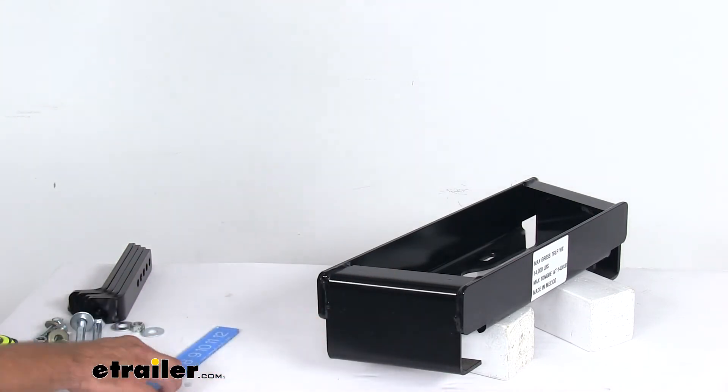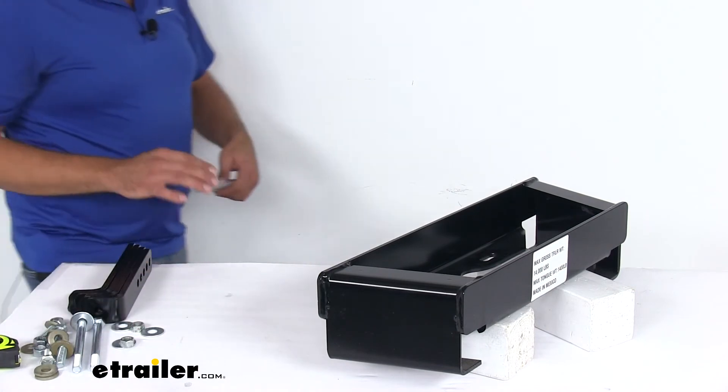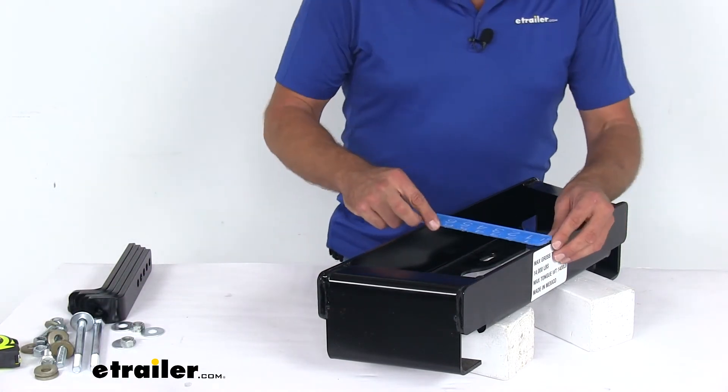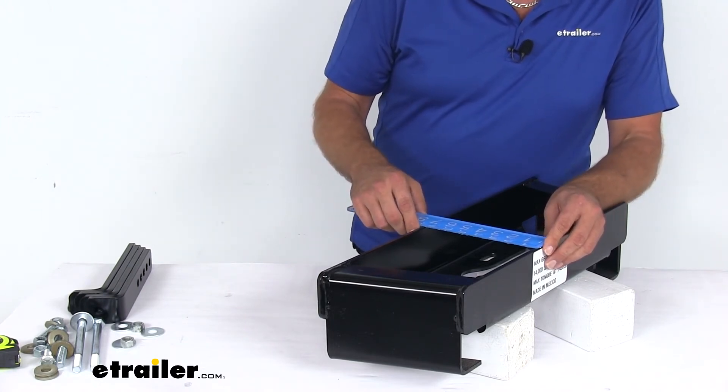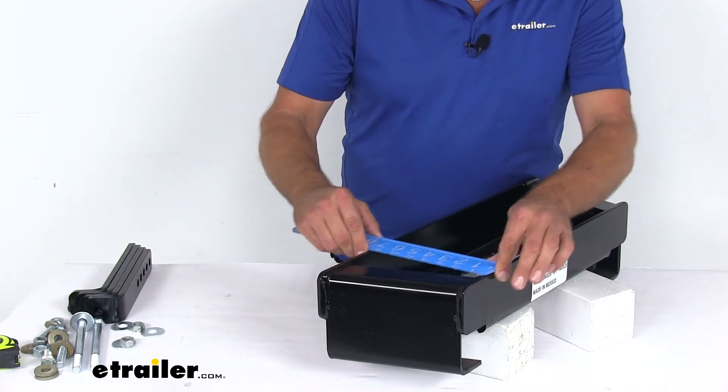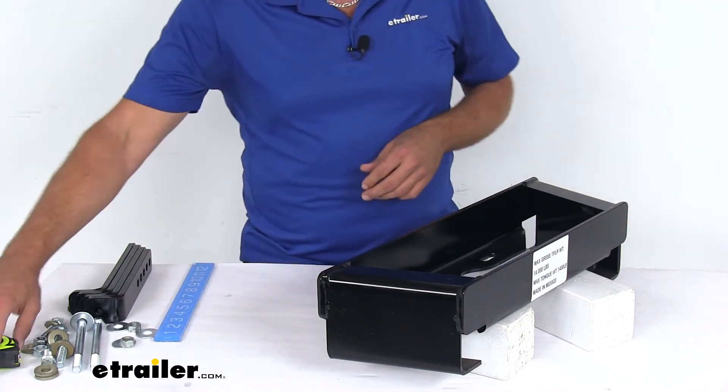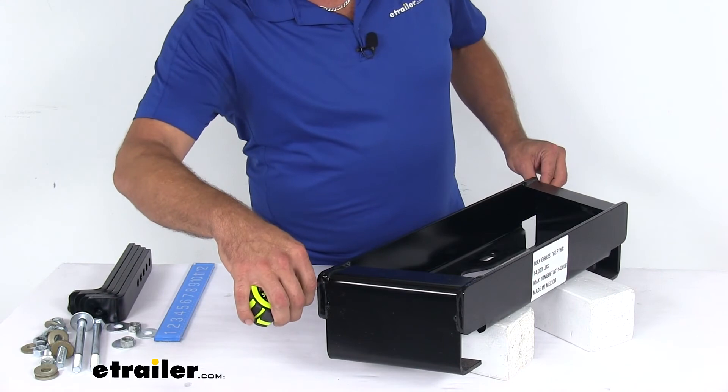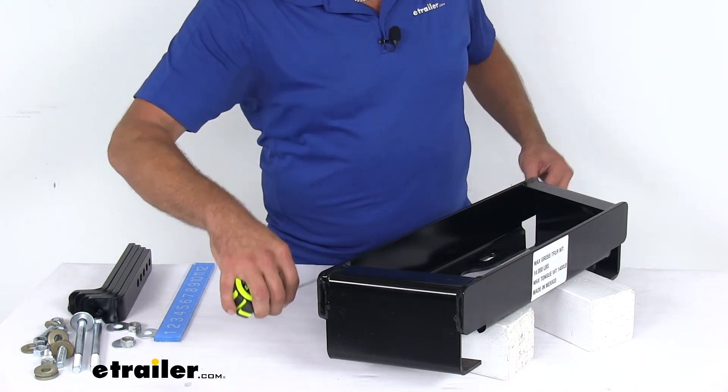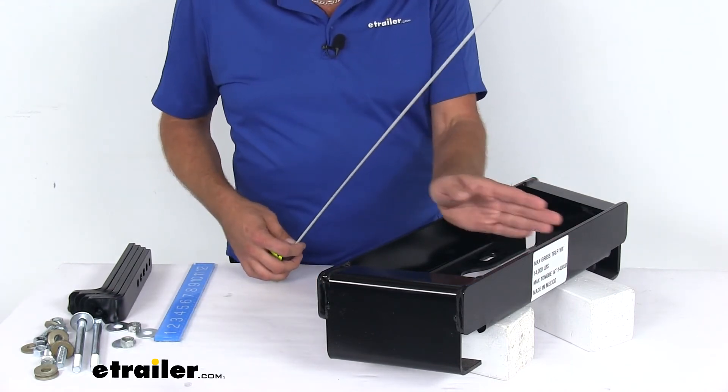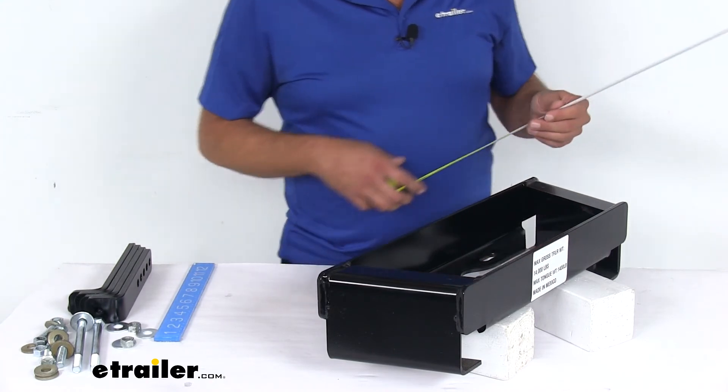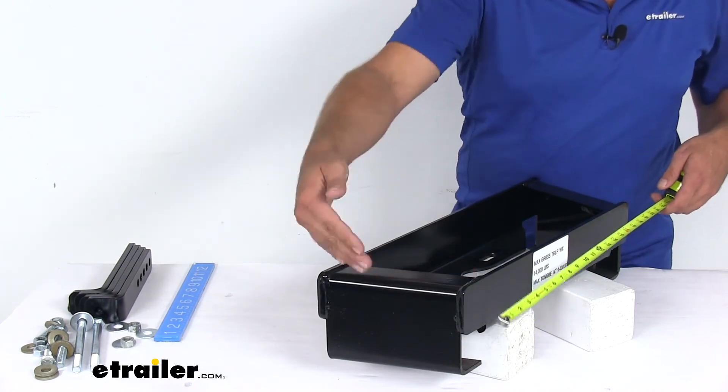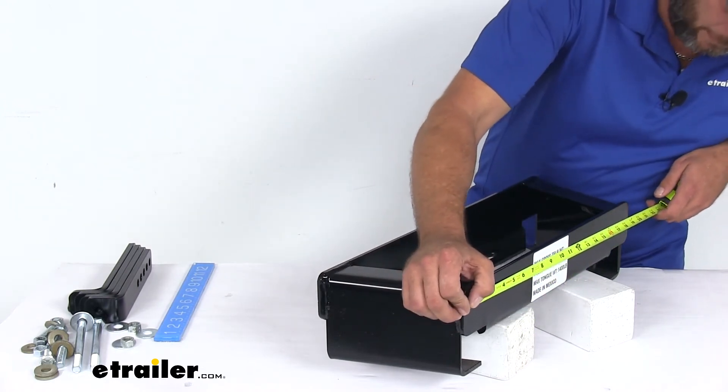It's a really nice connection point for most of those weight distribution systems. That shouldn't be an issue getting them connected. From front to back it's a little bit wider here—seven and a half inches all the way across at its widest point. That's going to be the back, which is 23 inches. If you measure from the center of your tongue of your trailer out each way, half of that would be 11 and a half inches, and that's going to be your total overhang. At its narrowest point in the front, it's 18 and three quarters.